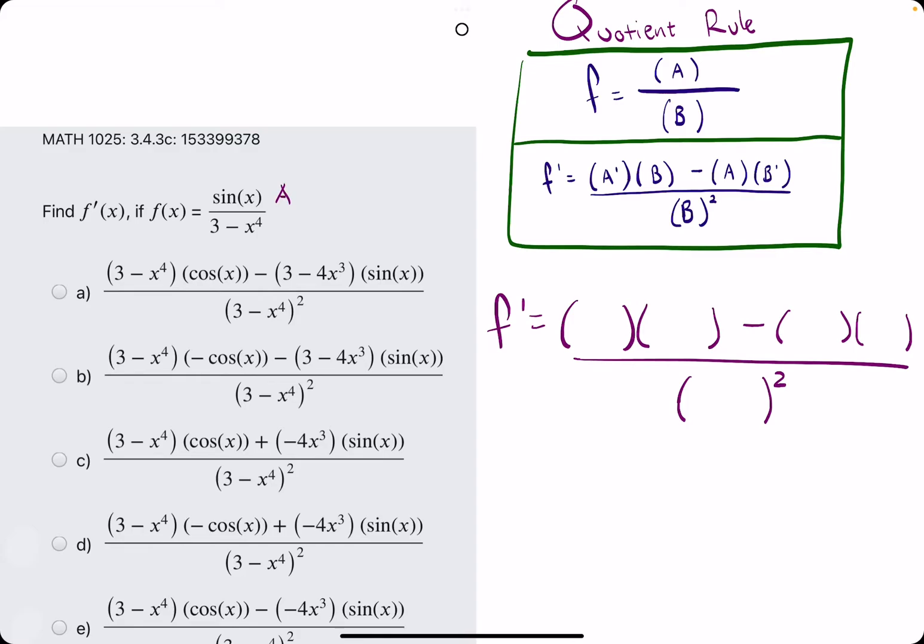Let's jump right into A prime first. A prime is the derivative of A, which is the numerator. So sine has a derivative of cosine of x. B is next, so we have 3 minus x to the 4th. A is sine of x. B prime is the derivative of 3 minus x to the 4th, negative 4x cubed. And then B on the bottom, 3 minus x to the 4th squared.